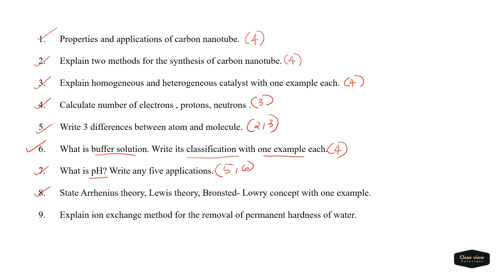The next question is: state the Arrhenius theory, Lewis theory, and Bronsted-Lowry concept with one example each.